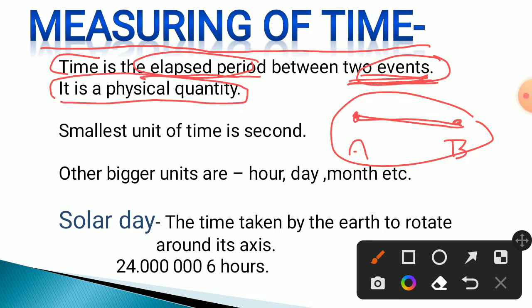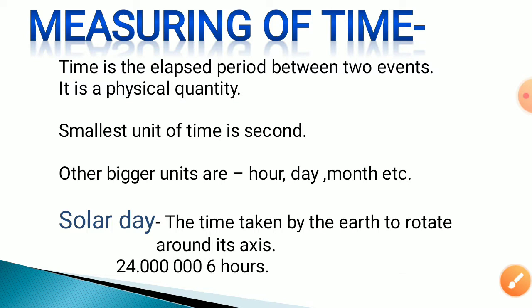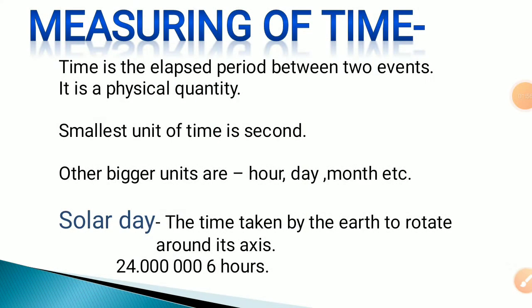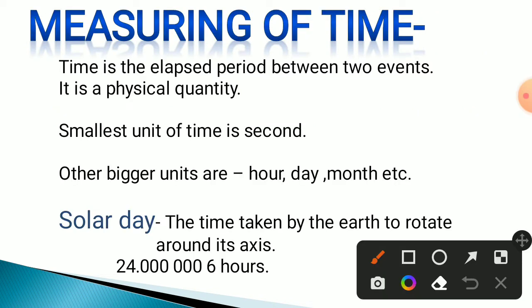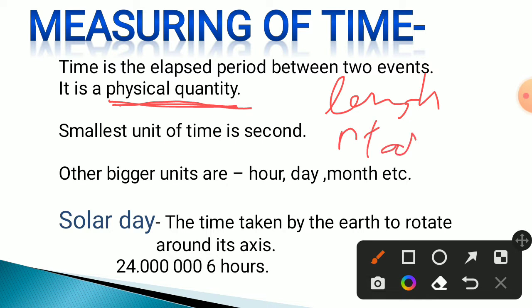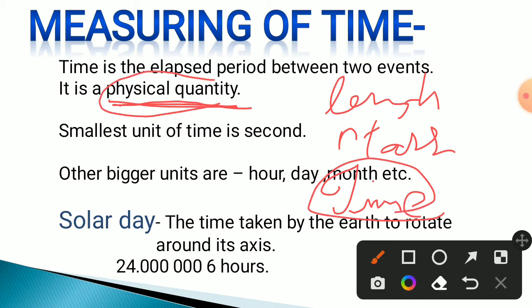Time is a physical quantity. We have already discussed that quantities which can be measured are known as physical quantities. Length is a physical quantity, mass is a physical quantity, and similarly time is also measured — that is why time is also a physical quantity. The smallest unit of time is the second.